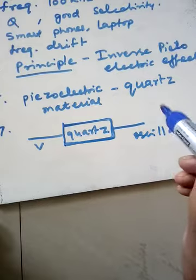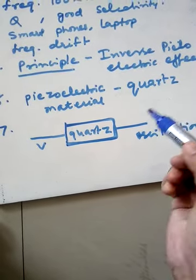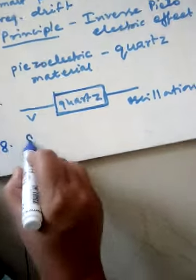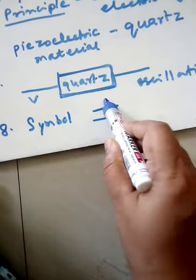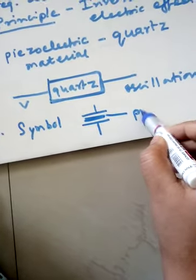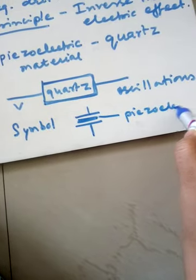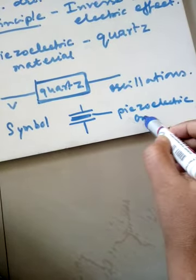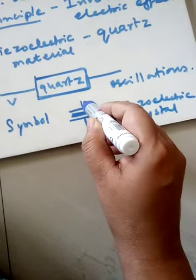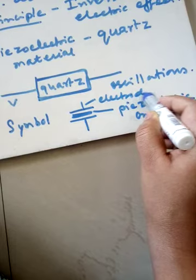The symbol for the piezoelectric crystal is like this. Here the piezoelectric crystal, that is the quartz crystal, is there and these are electrodes made up of metals for electrical contacts.